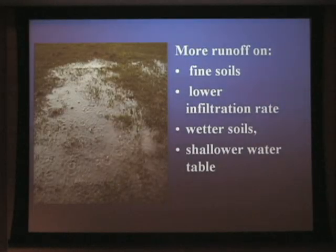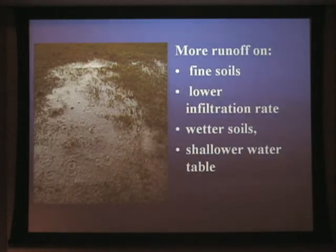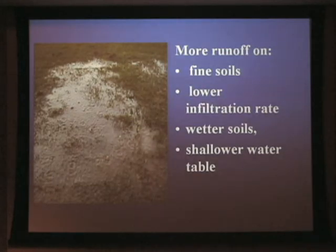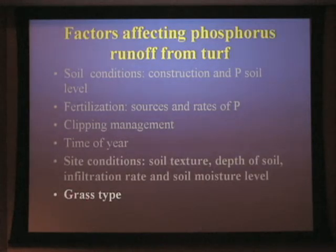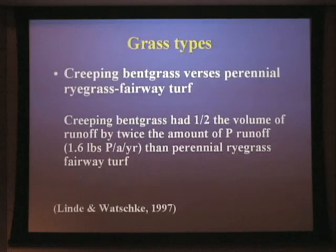So summarizing those site factors: as we got into higher runoff conditions, we got into finer texture soils, lower infiltration rates, and more runoff. These soils were wetter all the time with a shallow water table, and those factors related to greater runoff conditions. The next thing I want to talk about briefly is grass type — is there any difference between grasses and the potential for runoff, and in this case phosphorus in that runoff?